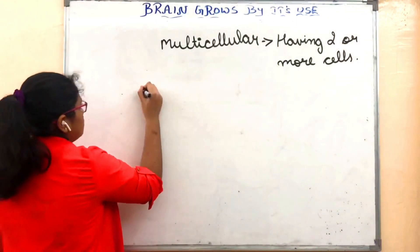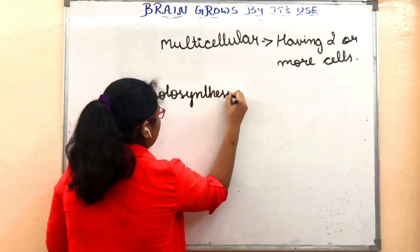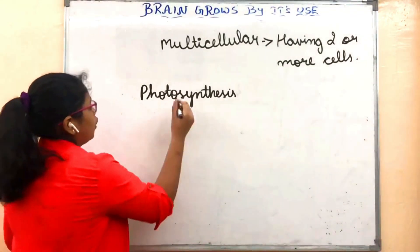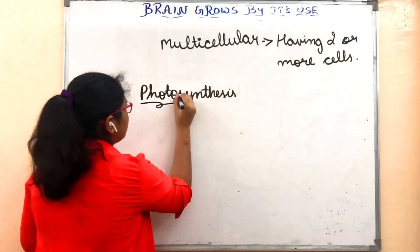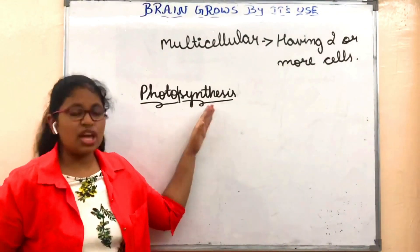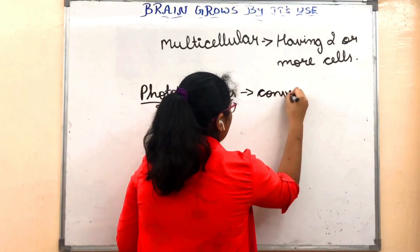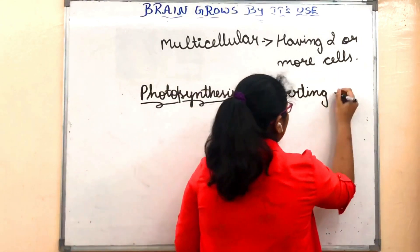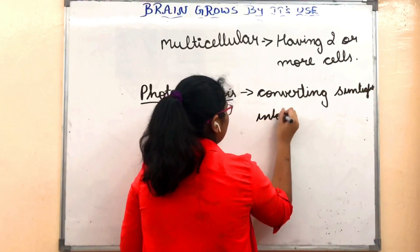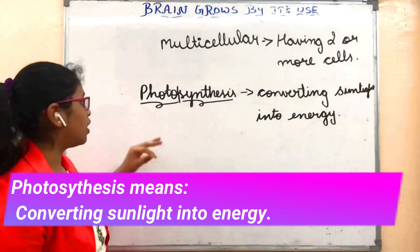Let's look at the definition of photosynthesis. I want to split this word into two parts: 'photo' means light, and 'synthesis' means putting together. So the meaning of photosynthesis is converting sunlight into energy. The process of converting sunlight into energy is known as photosynthesis.